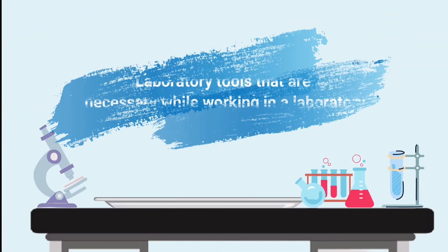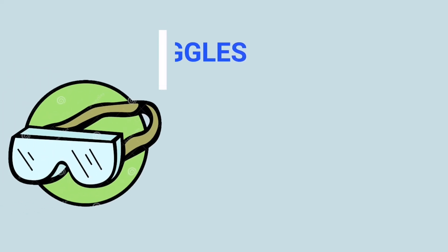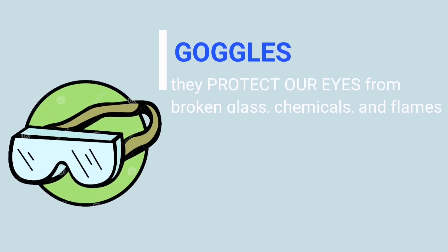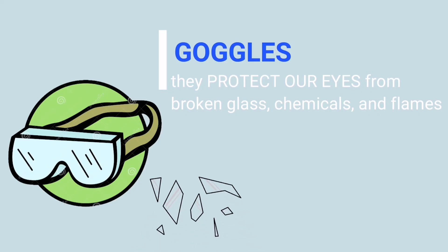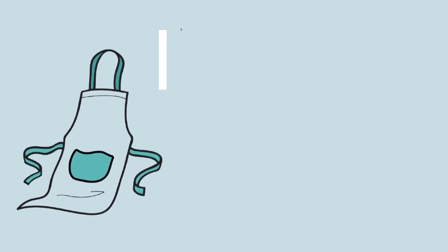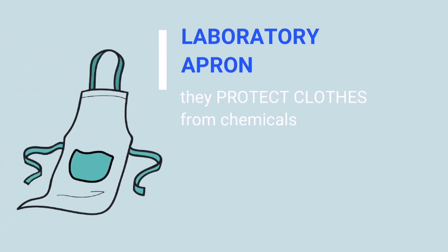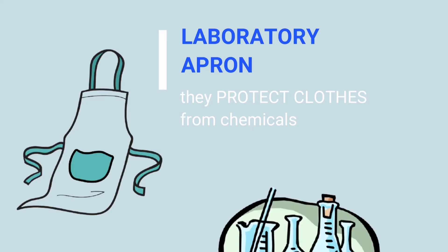Lastly, here are some examples of laboratory tools that are necessary while working in the laboratory. Goggles — they protect our eyes from broken glass, chemicals, and flames. And finally, we have the laboratory aprons — they protect clothes from chemicals.